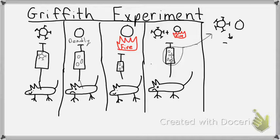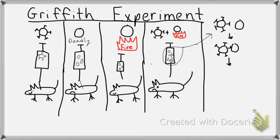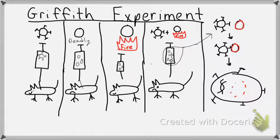Here is why: inside the syringe, the live rough bacteria was interacting with the dead smooth bacteria and eventually ate it. After the rough bacteria has eaten the smooth bacteria, the smooth bacteria's DNA is being digested and exposed. The smooth bacteria — that red circle — is being digested and its DNA is being exposed.